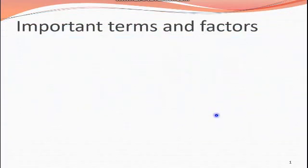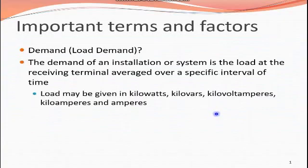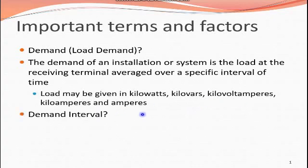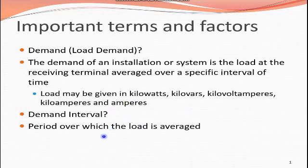The first term is demand load. The demand of an installation or a system is the load at the receiving terminal, averaged over a specific interval of time. Load may be expressed in kilowatts, kilowatt-amperes, kiloamperes, or amperes. The demand interval is the period over which the load is averaged.